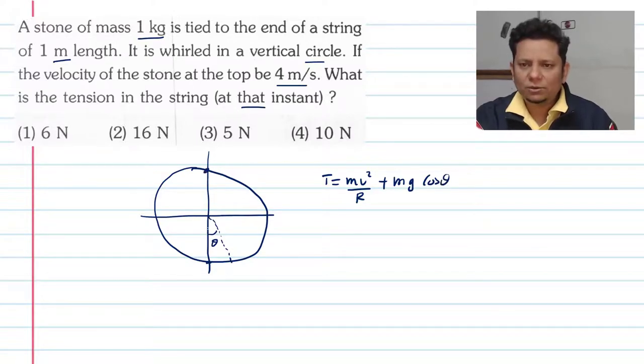Now, highest point is because this angle is 180 degrees. So, we have to write the value of m v square by r minus m g, because cos theta is minus 1.